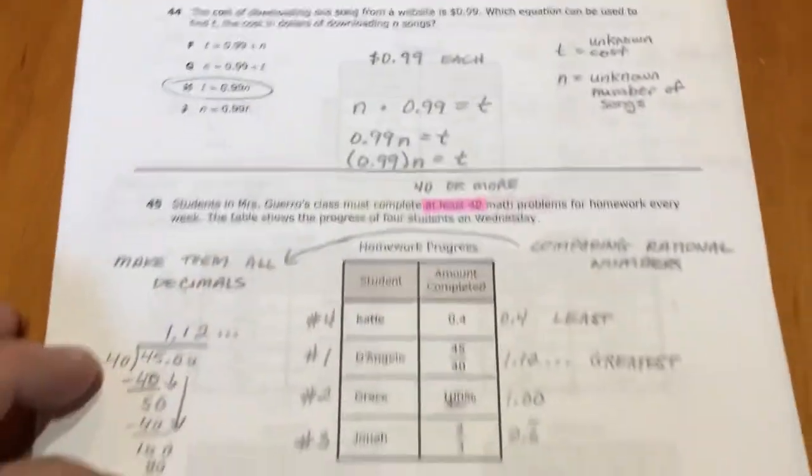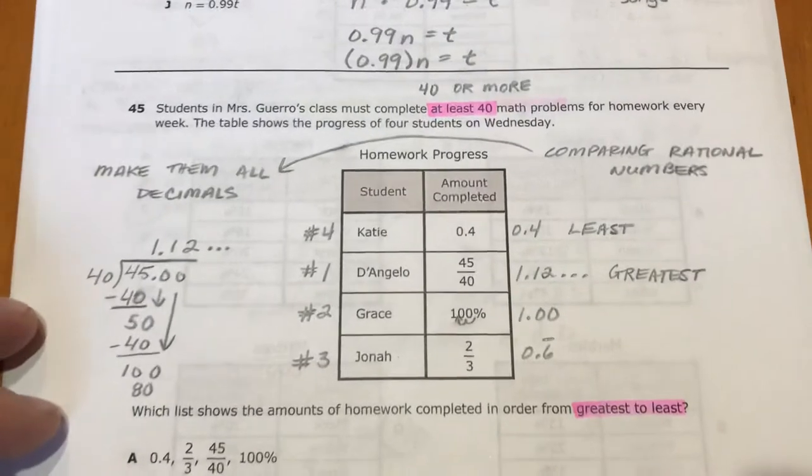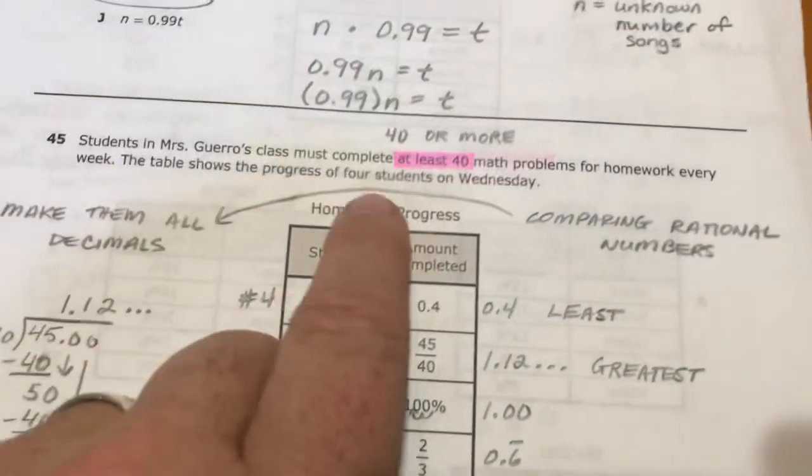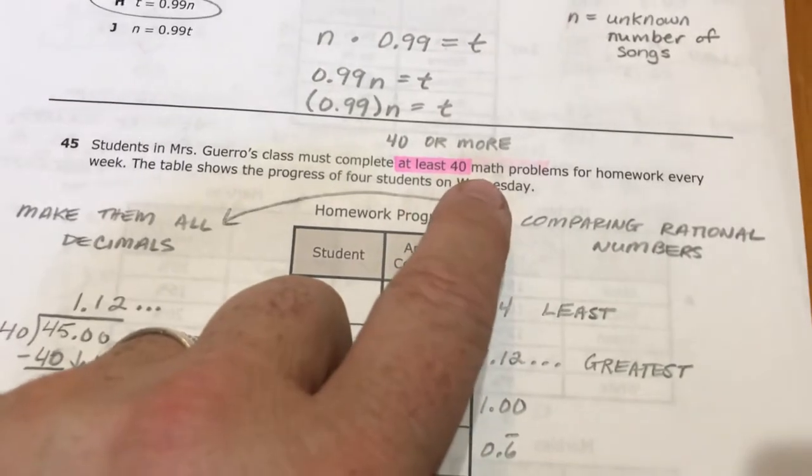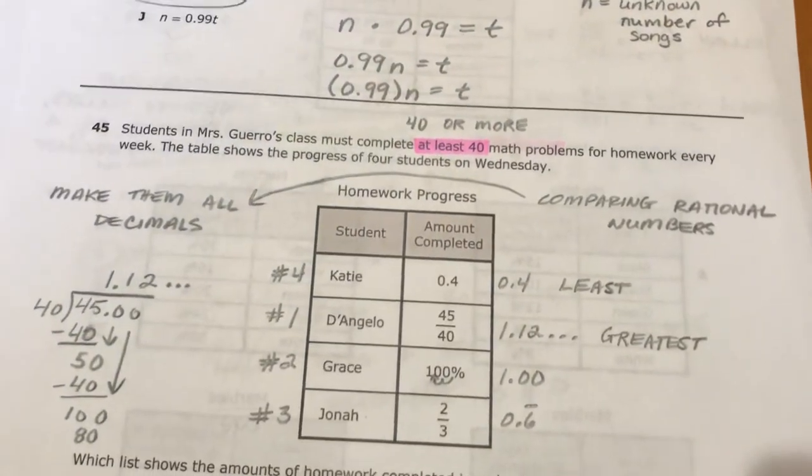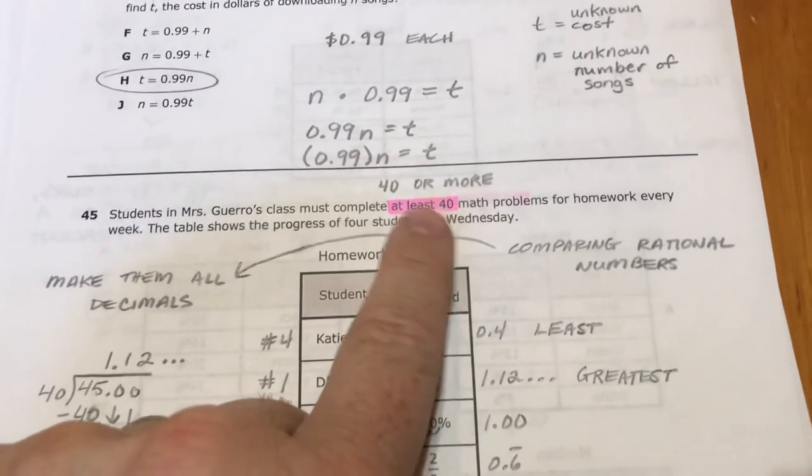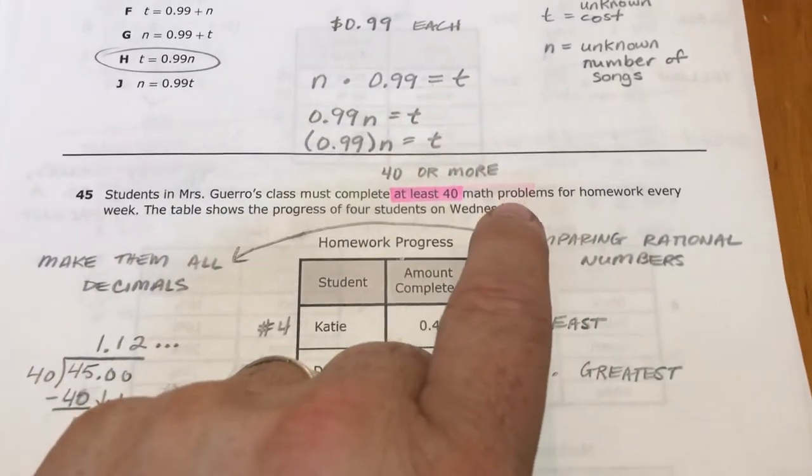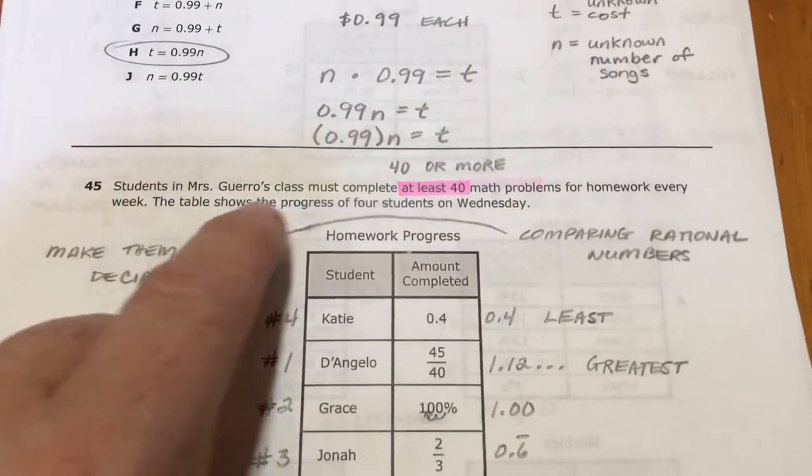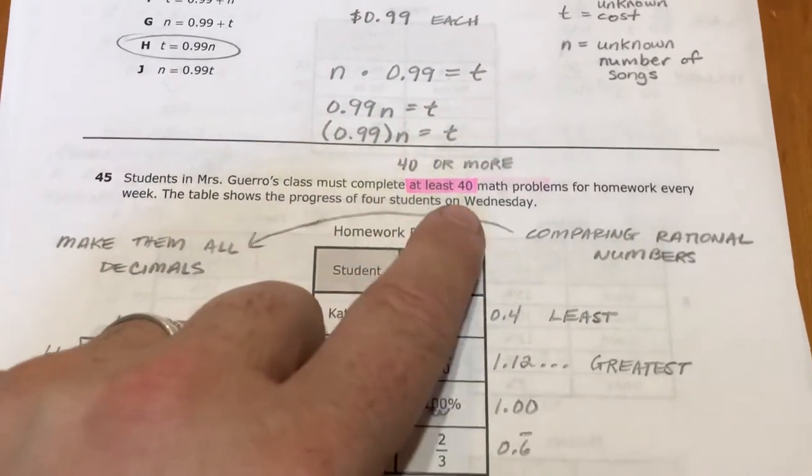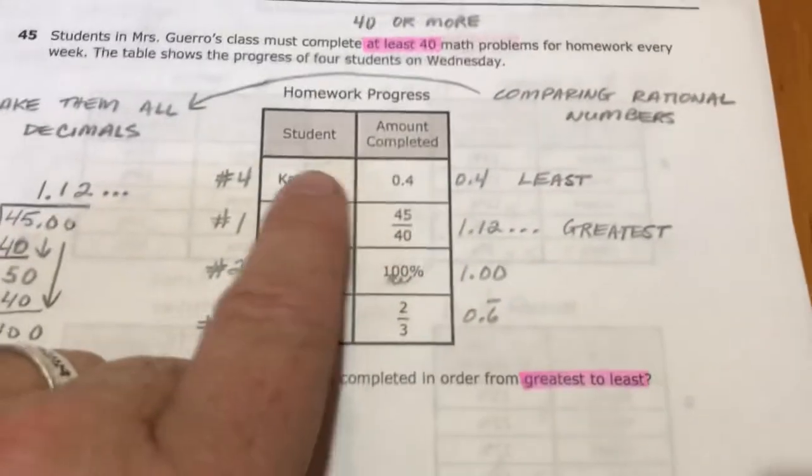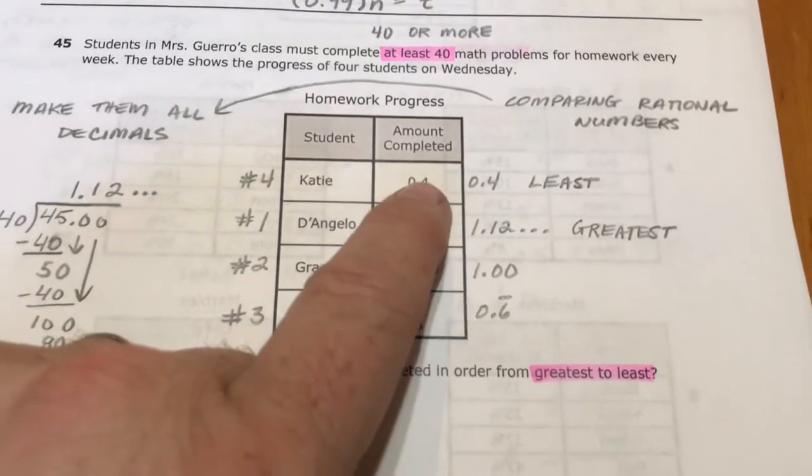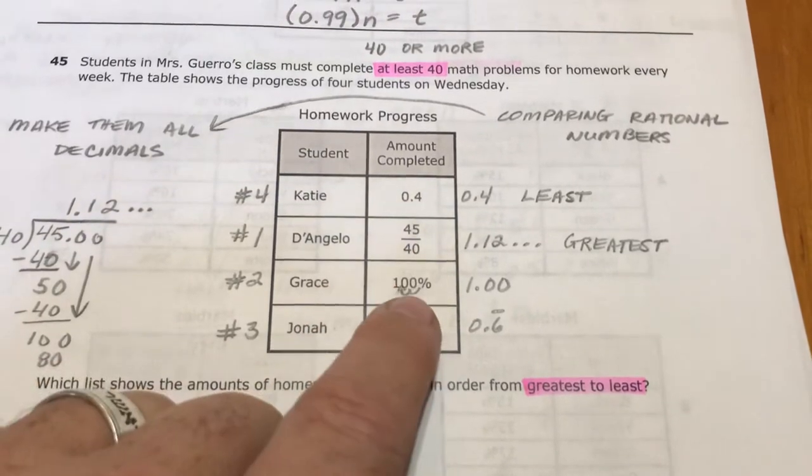All right, 45. Students in Miss Guerrero's class must complete at least 40 math problems for homework every week. The table shows the progress of four students on Wednesday. So here's how much each student has done, and they've given them to you in different formats: you got a decimal, a fraction, a percent, and another fraction.